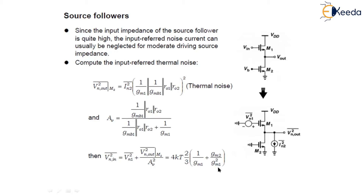Since the source follower adds noise to the input signal and provides gain less than 1, it is generally avoided in the design of low noise amplifiers.